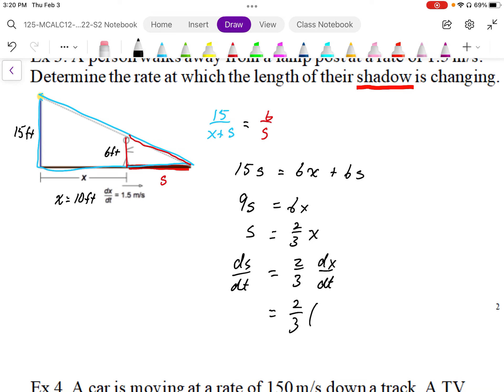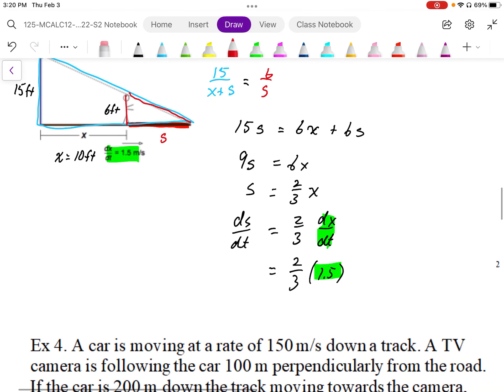So, 2 thirds times dx by dt, which is 1.5 meters per second. I'm just going to highlight that here. Okay, and then our ds by dt then, our ds by dt works out to be, it's going to be 1 meter per second.